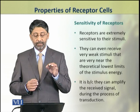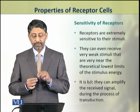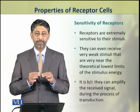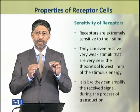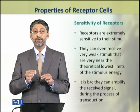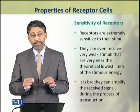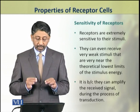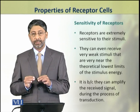Dear students, the third property of receptor cells is the sensitivity of receptors. Receptor cells are extremely sensitive to their stimuli. They can even receive a very weak stimulus that is very near to the threshold level — the minimum level of energy which is detectable — because they can amplify the received signal during the process of transduction.